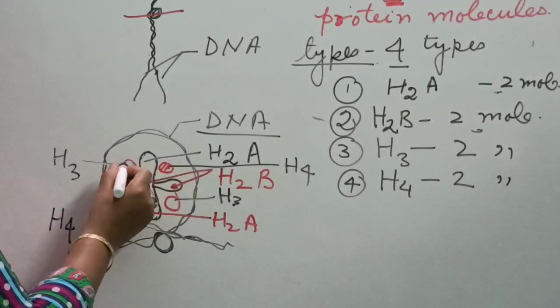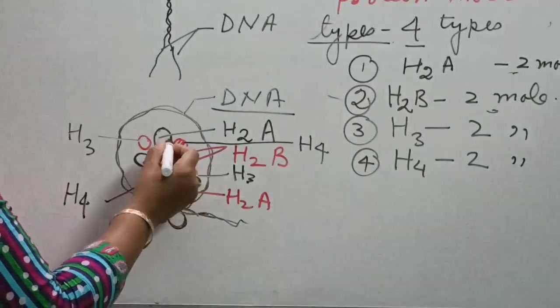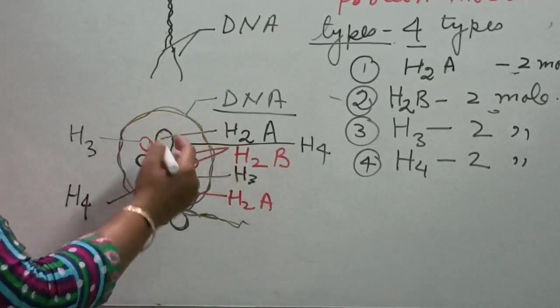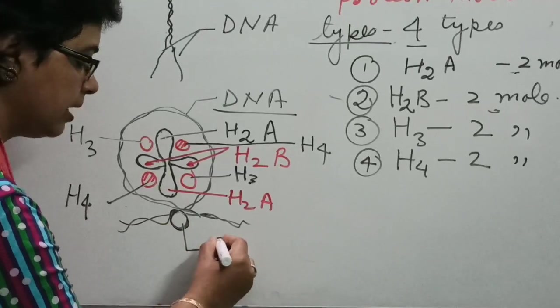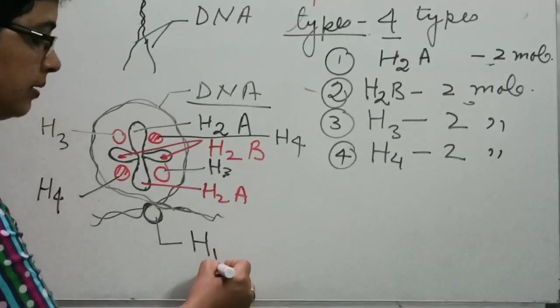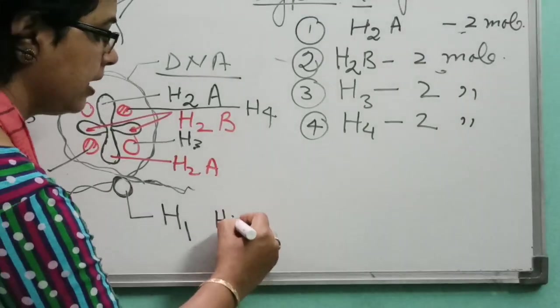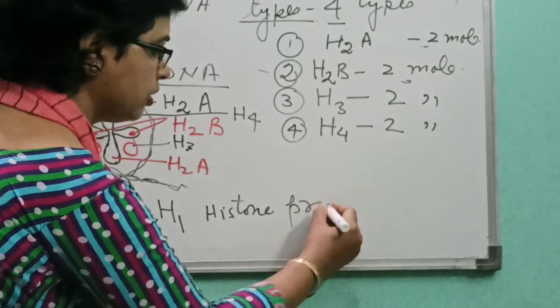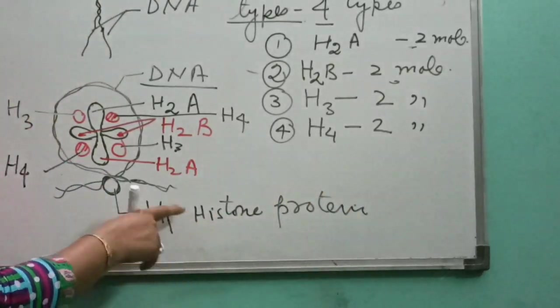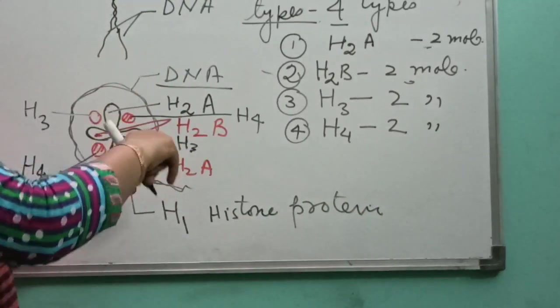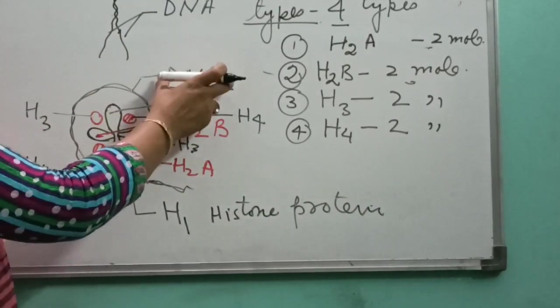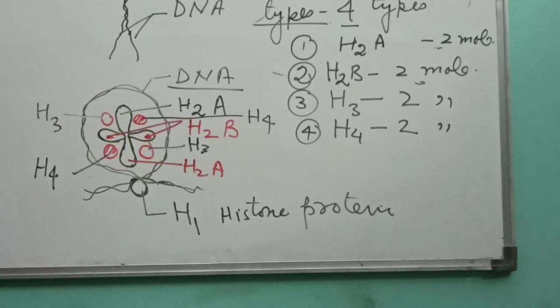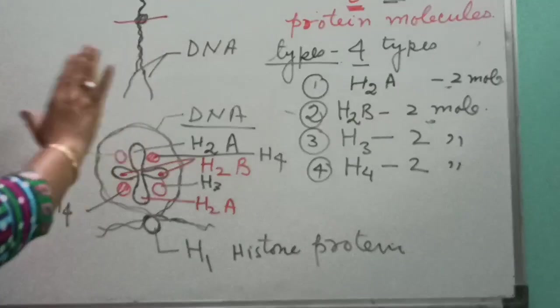So, eight histone molecules with DNA. This one is termed as H1. It is again a ninth histone protein molecule, but it is not there inside the DNA. So the nucleosome is made up of DNA and eight histone molecules. This is what about the structure of chromosome.